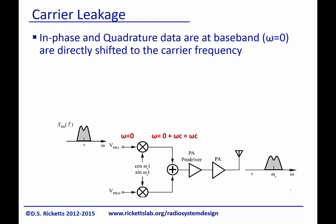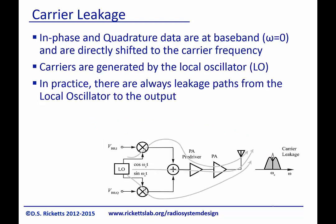Some of the non-idealities of the direct conversion architecture have to do with carrier leakage. The in-phase and quadrature data at the baseband are directly shifted to the carrier frequency. The carriers are generated by the local oscillator, but in practice this local oscillator should only drive the mixer — yet there's going to be a small amount of feed-through through the two mixers. The local oscillator is generally in a circuit with the other components, so there's either a parasitic coupling or it's going through an actual component such as the mixers, and we end up with it leaking out right on top of our signal.